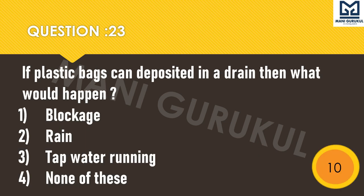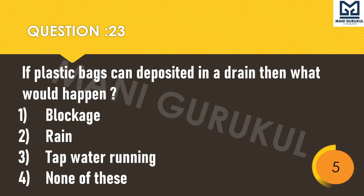Question 23: If plastic bags are deposited in a drain, what would happen? First: blockage. Second: rain. Third: tap water running. Fourth: none of these. If plastic bags collect in drains, what would happen among these — blockage, rain, tap water running, or none of these?